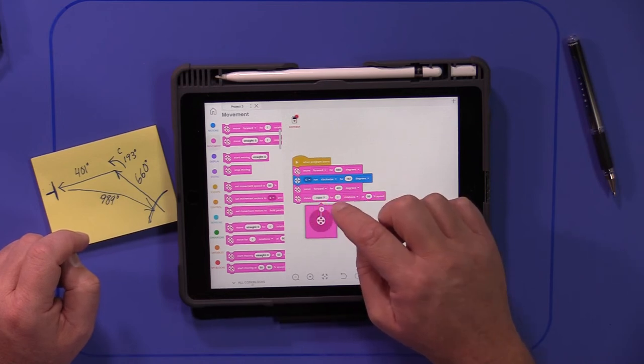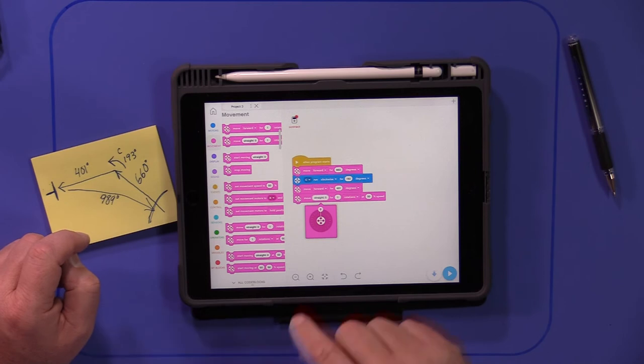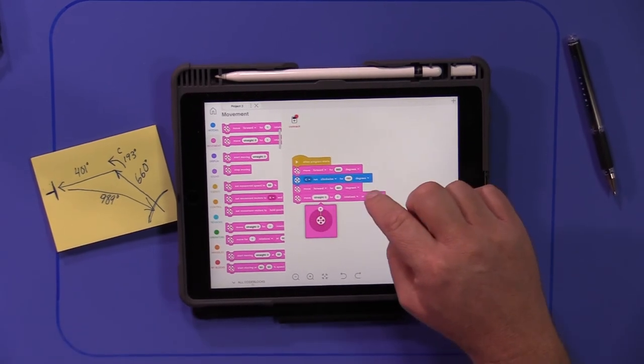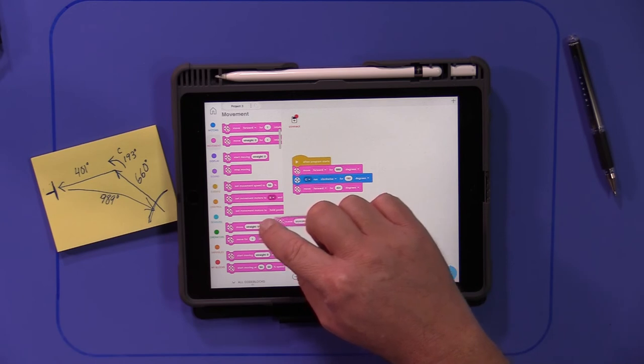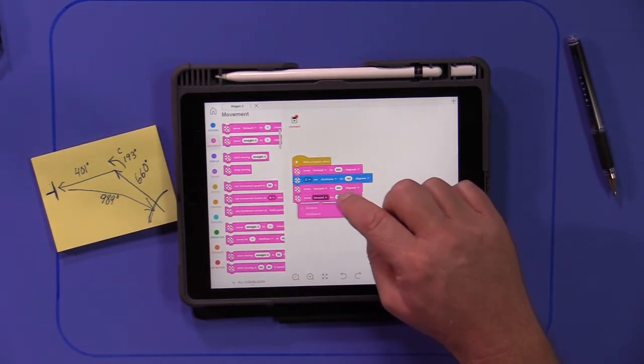Hmm. You know, in the old blocks, they had a little bit, you could just move backwards. Let me just see here. Okay, let's go back. Let's move. Okay, let's move backwards.